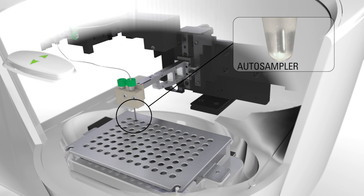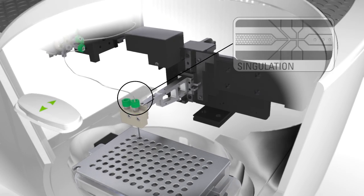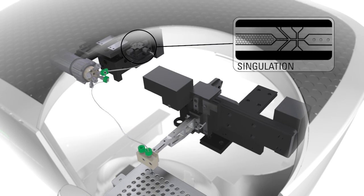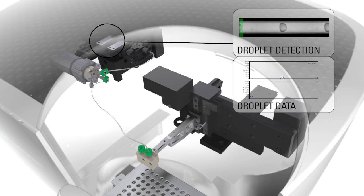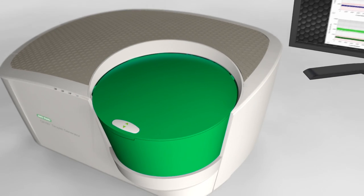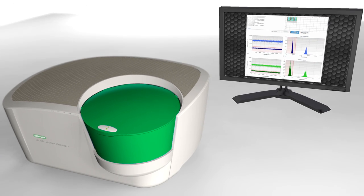The Droplet Reader automatically sips each sample, singulates all the droplets from a sample, and then streams them in a single file past a two-color fluorescence detector. The detector reads each droplet in turn at the rate of 1,000 droplets per second and determines which droplets emit fluorescence and which do not.